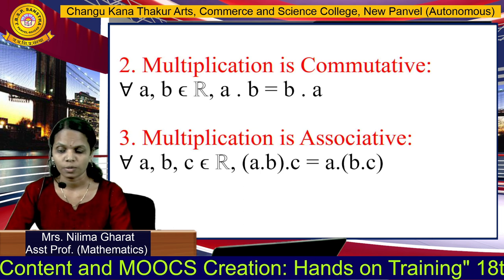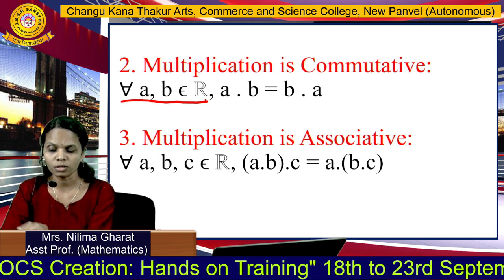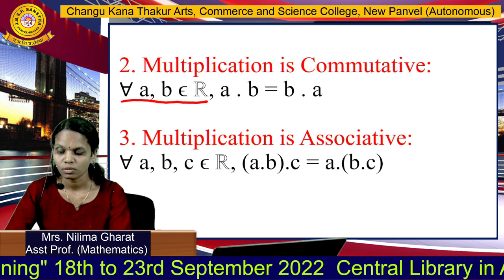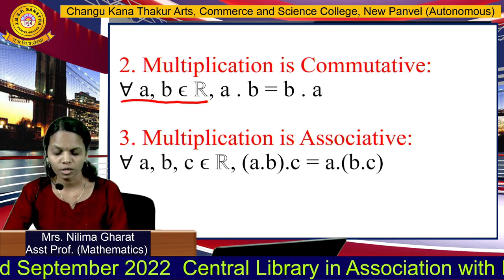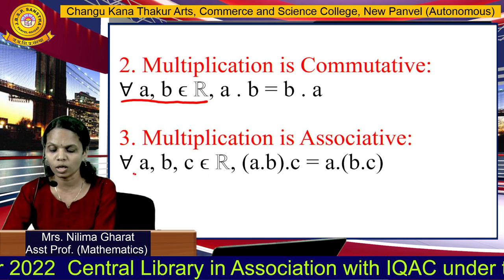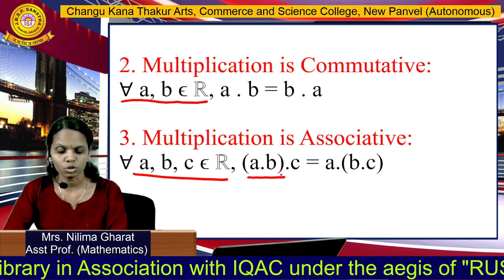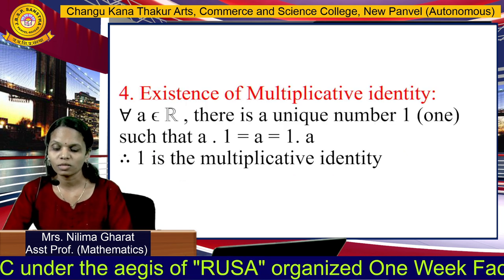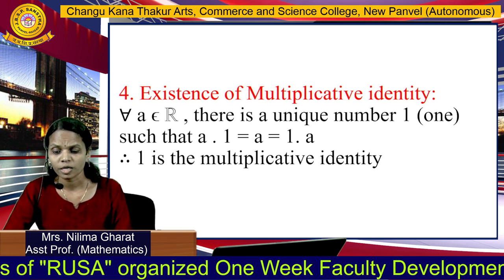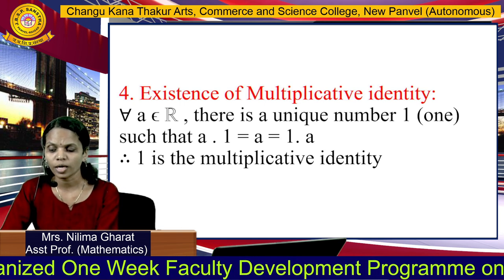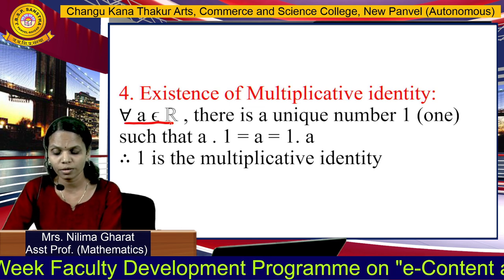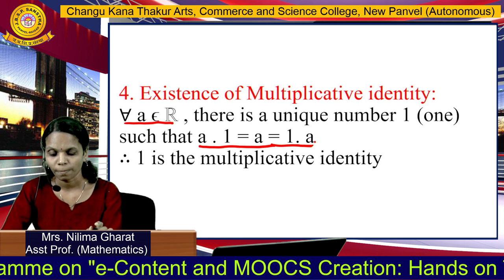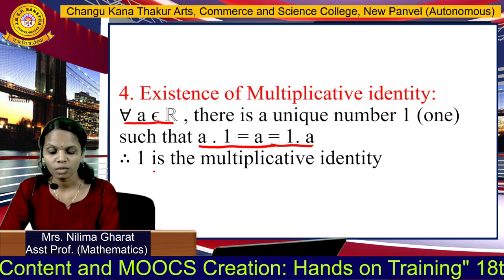The second property is the commutative property: for any two real numbers A and B, A into B equals B into A. The third property is the associative property: for all A, B, C belonging to real numbers, (A into B) into C equals A into (B into C). The fourth property is the existence of multiplicative identity: for any real number A, there is a unique real number 1 such that A into 1 equals A equals 1 into A. So 1 is the multiplicative identity.